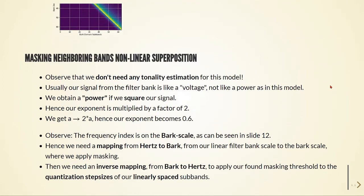We observe that we don't need any tonality estimation for this model. Usually our signal from the filter bank is like a voltage and is not like a power as it is in this model. We obtain a power if we square our signal, and hence our exponent is multiplied by a factor of two. So we get this a going to two times a, and hence our exponent becomes 0.6.